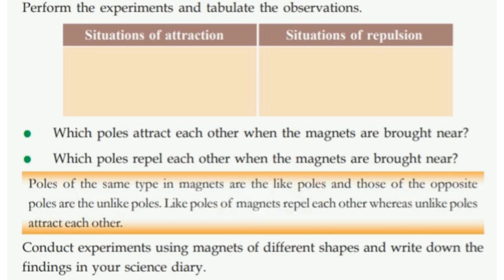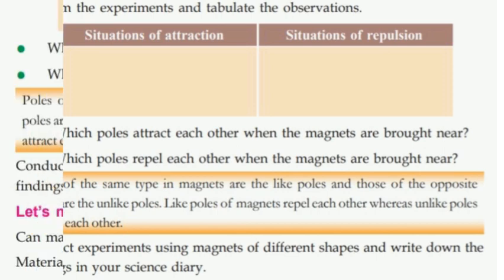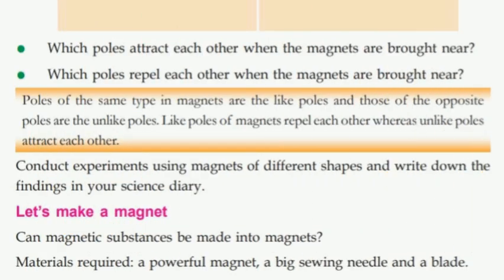Conduct experiments using magnets of different shapes and write down the findings in your science diary. Now, can a magnetic substance be made into a magnet? How do we make a magnet? Materials required: a powerful magnet, a big sewing needle, and a blade.